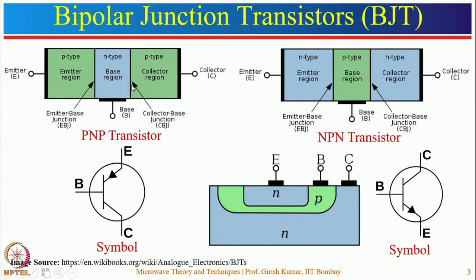The base region passes charge carriers to the collector, so it should be lightly doped and relatively thin. The collector region collects the charge carriers and should have relatively more space, situated on the other side. When used in a circuit, they are represented by symbols where the arrow represents the direction of current flow — from P-type to N-type region.